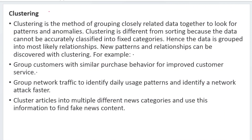The next one is clustering. Clustering is a method of grouping all related and closely related data together to look for patterns and anomalies. Clustering is different from sorting because the data cannot be accurately classified into fixed categories. In clustering, we try to group all similar items into one category. The data is grouped into most likely relationships, and new patterns and relationships are discovered with the help of clustering.